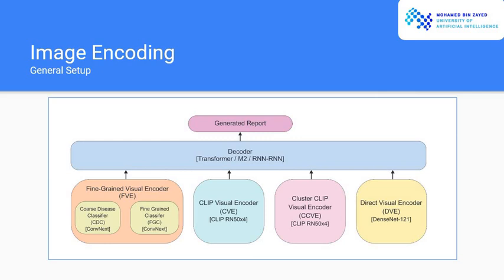The general setup is the following. We have four different encoding methods: fine-grained visual encoder, CLIP-based visual encoder, Cluster CLIP visual encoder, and direct visual encoder. We employed three different decoding methods: transformers, M2, and RNN-RNN, which is basically a hierarchy of LSTMs. Now I'll talk about each of the encoding methods and decoding methods in more detail.